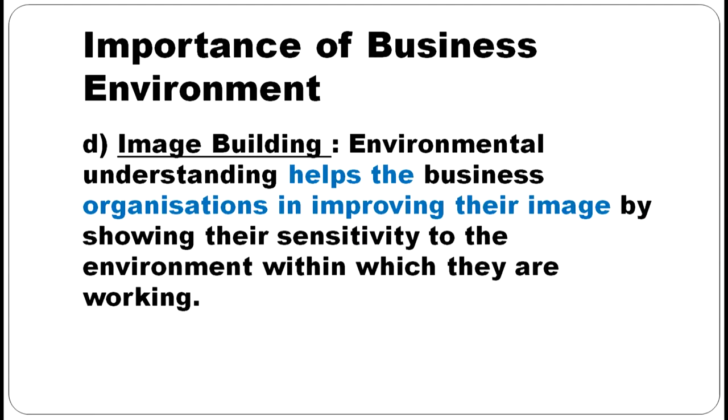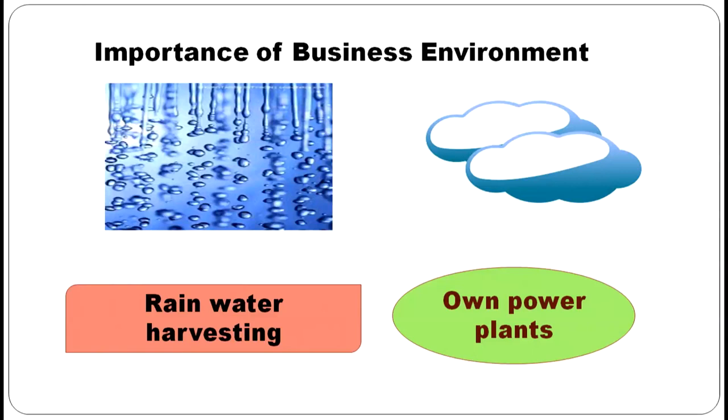Understanding the environment helps business organizations improve their image by showing sensitivity to the environment. Some organizations have started rainwater harvesting because pure water is precious and there is severe shortage. That improves the image of the organization. Similarly, some organizations have created their own power plants for electricity generation, which also helps improve organizational image.